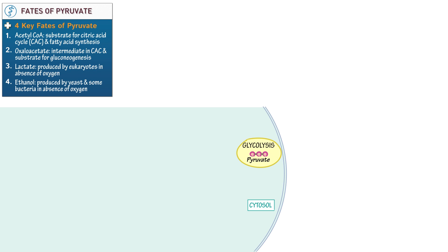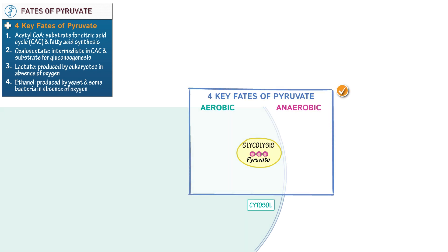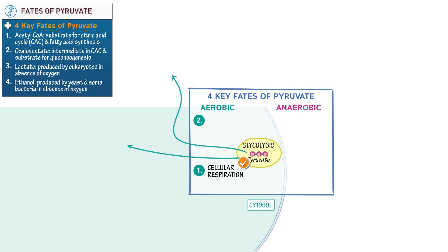Show that we categorize the pyruvate fates based on whether they are aerobic or anaerobic, meaning whether they occur in the presence or absence of oxygen. In aerobic conditions, in the presence of oxygen, pyruvate has two possible fates. The first is cellular respiration, which occurs in fed conditions when glucose is abundant. And the second is gluconeogenesis, which occurs in fasting conditions, when glucose is in demand.